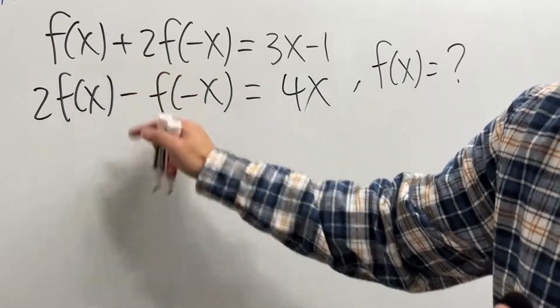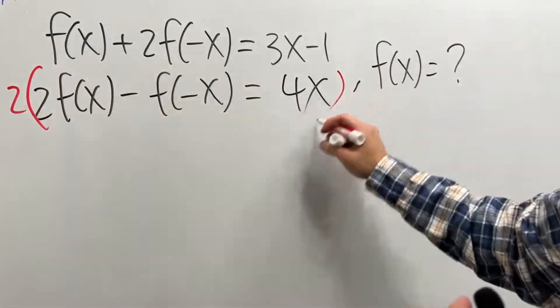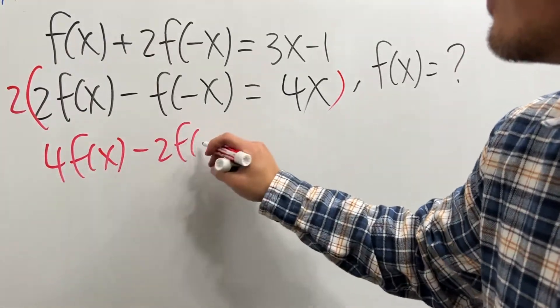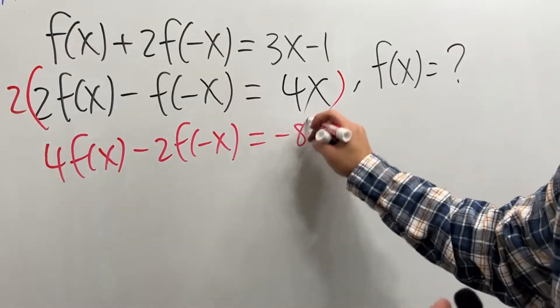Notice this is negative, this is positive. I'm going to just multiply everybody by 2 right here on the bottom. So we will get this right here become 4f(x) - 2f(-x), and this is equal to -8x.